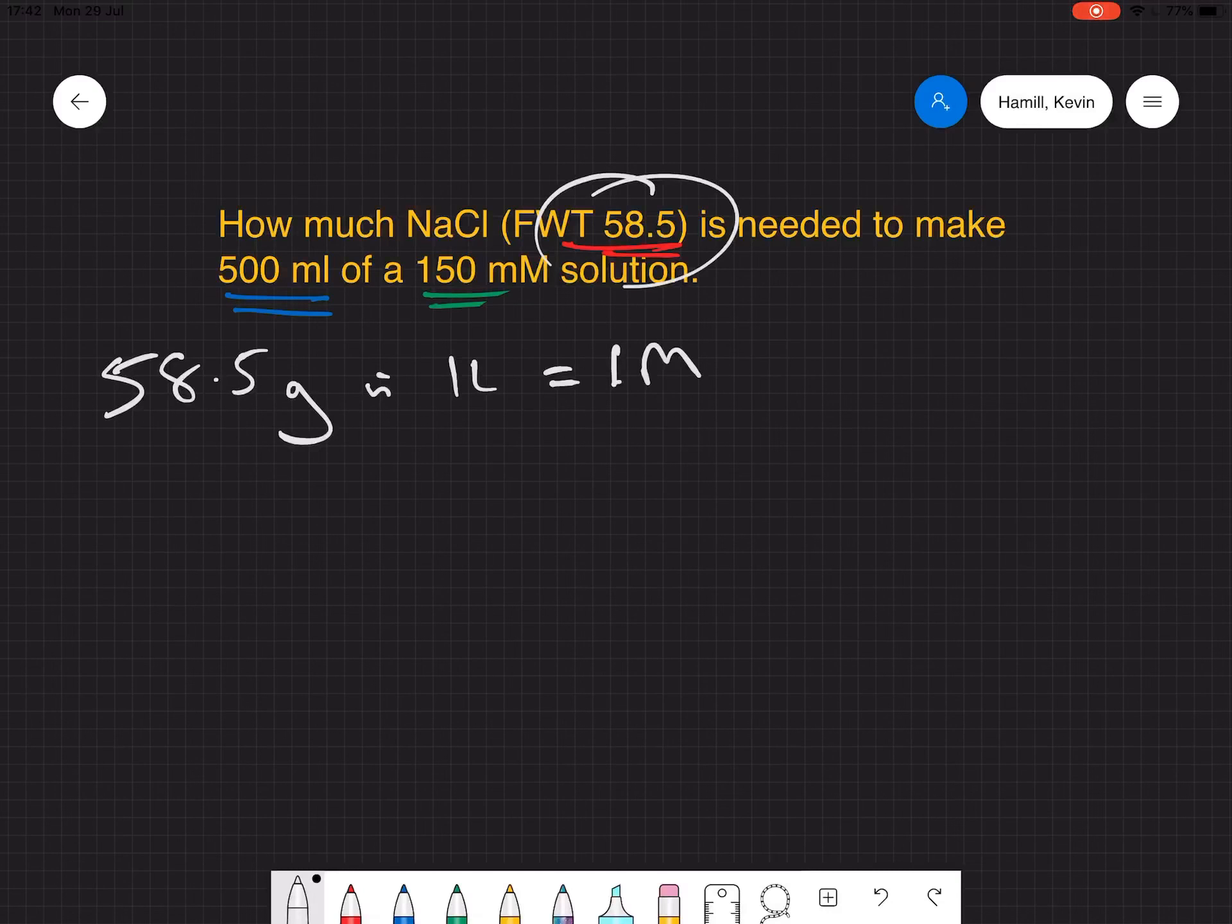But I only need 500 mils, so I need 58.5 divided by 2, which would give me 500 mils of one molar.